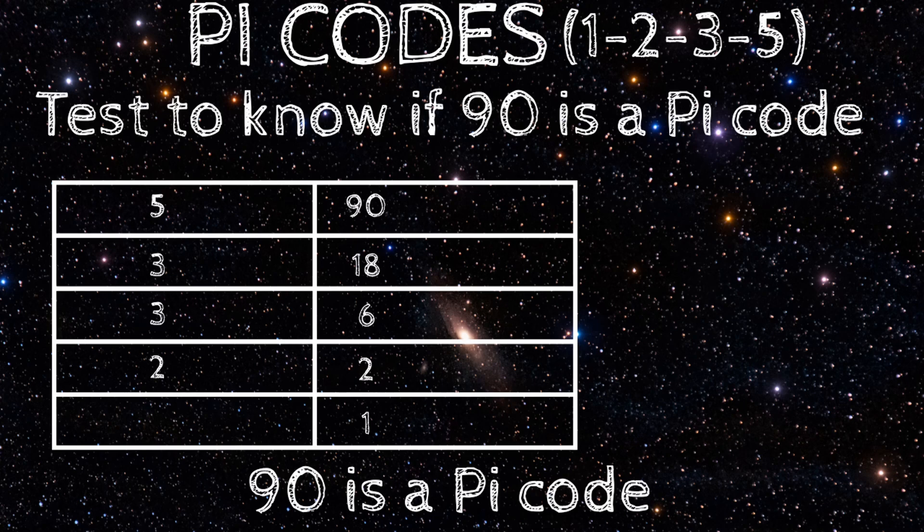Note, because 90 is a pi code, and it resulted to 1, automatically all the products gotten in this division, which are 18, 6, and 2, are all pi codes.